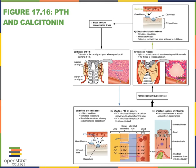This wraps up our discussion of parathyroid hormone, secreted by the parathyroid glands, as well as calcitonin, secreted by the thyroid glands — one of the hormones of the thyroid glands. Of course, the thyroid also secretes thyroid hormone.